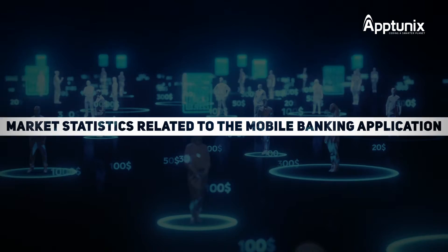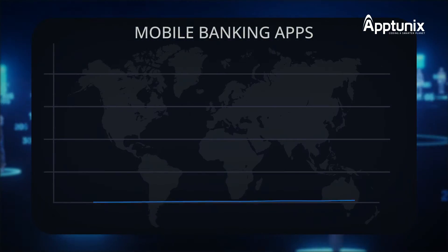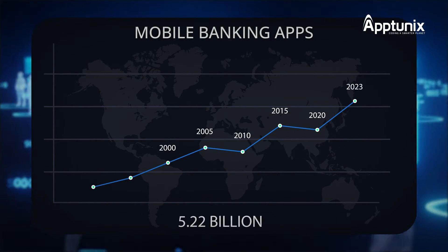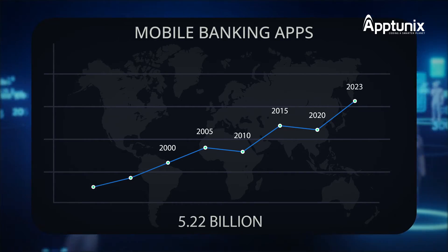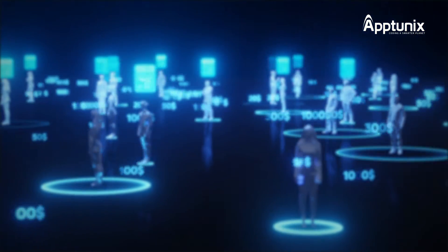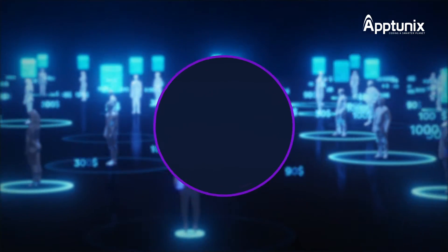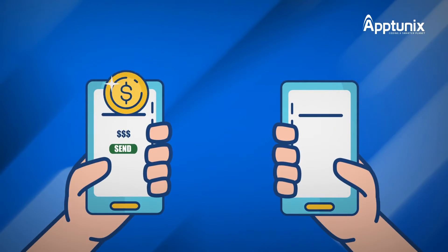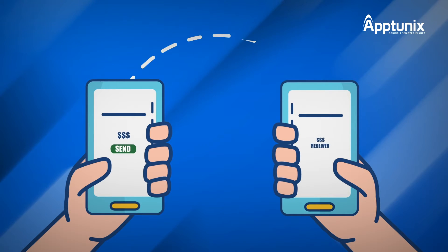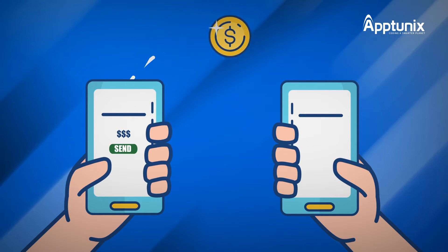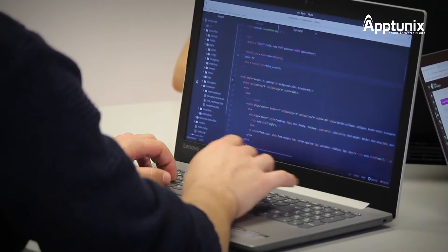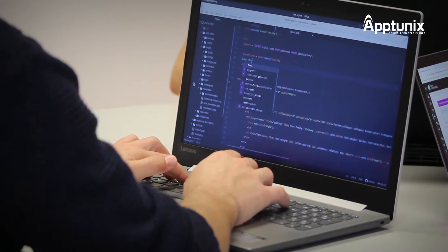As per market statistics related to mobile banking apps in 2023, there are about 5.22 billion unique mobile users globally. Bank of America is the industry leader with the maximum mobile app users of around 30 million. The payment value made using mobile applications reached around $503 billion in 2020 and is increasing constantly. Therefore, developing a mobile banking application can make a good profit for the banks.